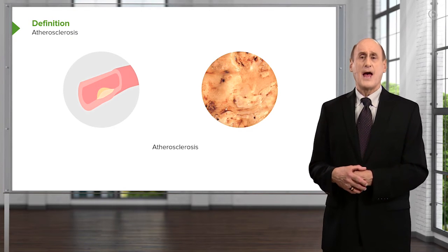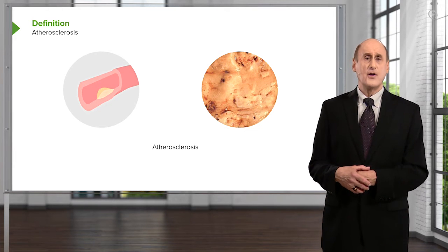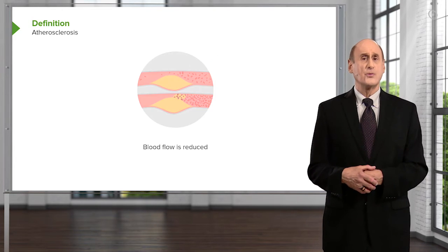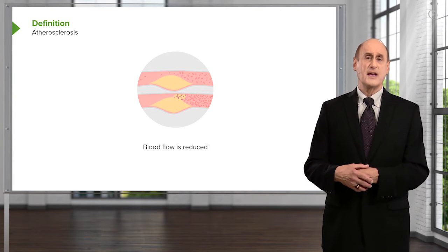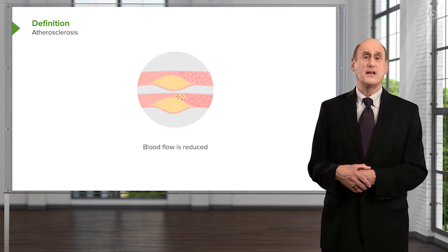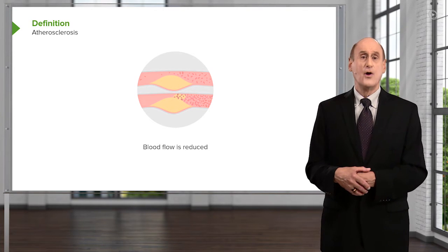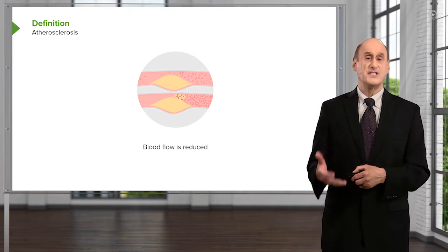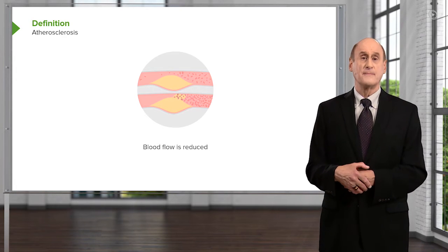What happens when atherosclerosis develops is that the artery gradually becomes blocked. Blood flow is reduced. We can have ischemia, or lack of blood flow. Or one can even form a blood clot and totally obstruct the blood vessel, with the resultant death of tissue beyond the area that has been blocked.